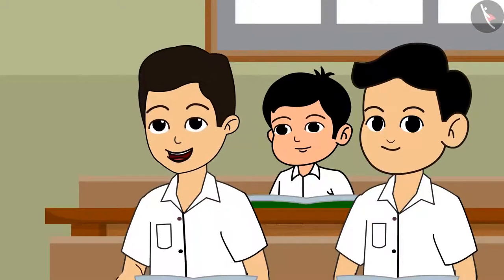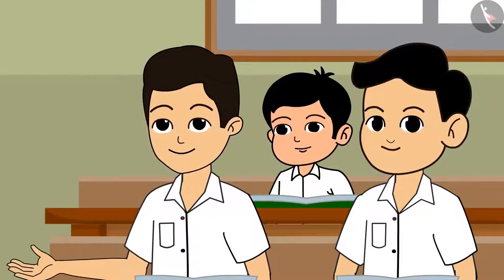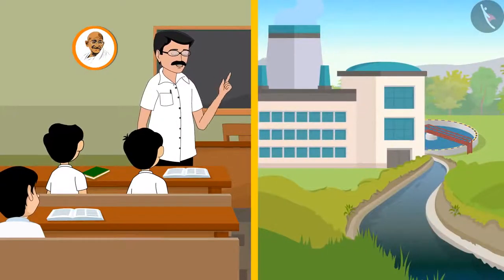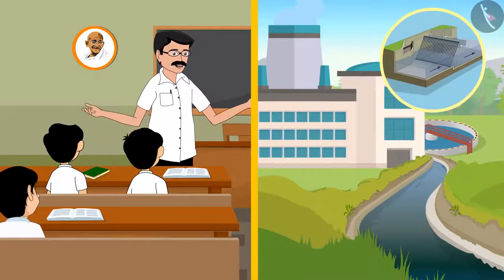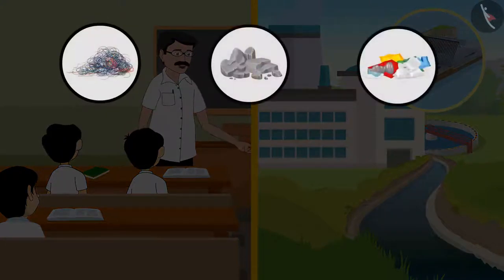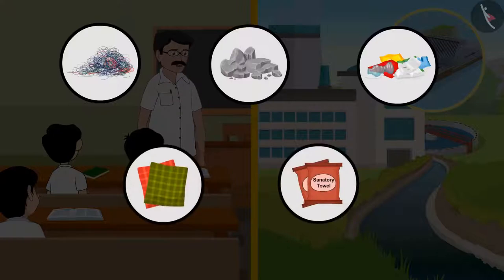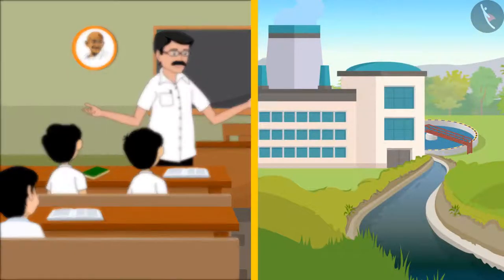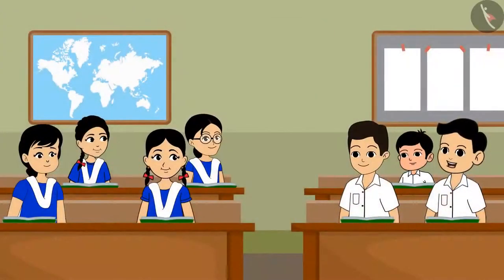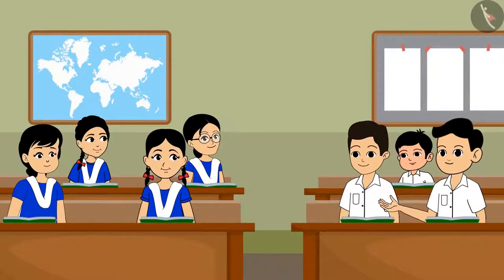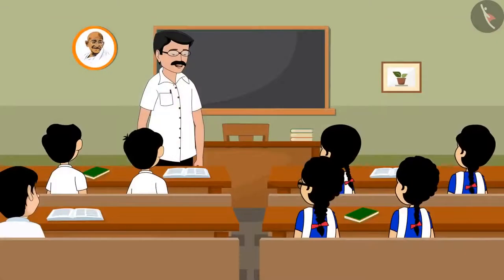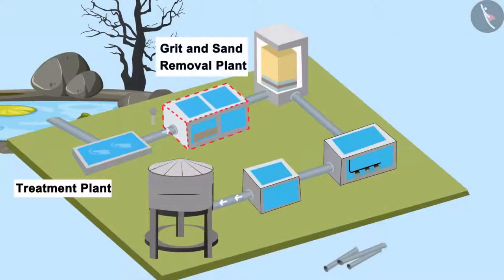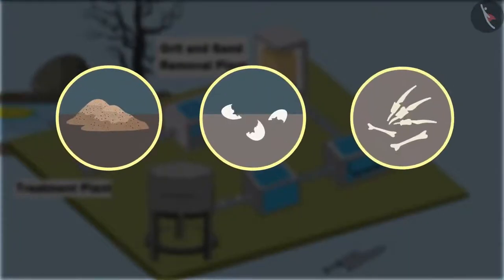Sir, can you explain the whole process of waste water treatment to us? Yes, this entire process is of 4 to 5 steps. In the first phase, sewage water is flown through the screen or mesh of the treatment plant, separating some of the larger sized suspended materials like fibres, stones, packets, napkins, etc. In this way, about 60% of the suspended particles are separated by the process of filtration. That is why we should not put all these things in water. This water is then sent to the grit and sand removal plant. Here, sand, egg peels, bone fragments, etc. are separated.